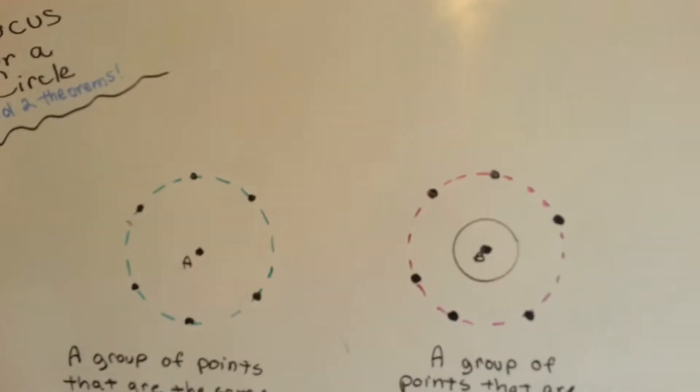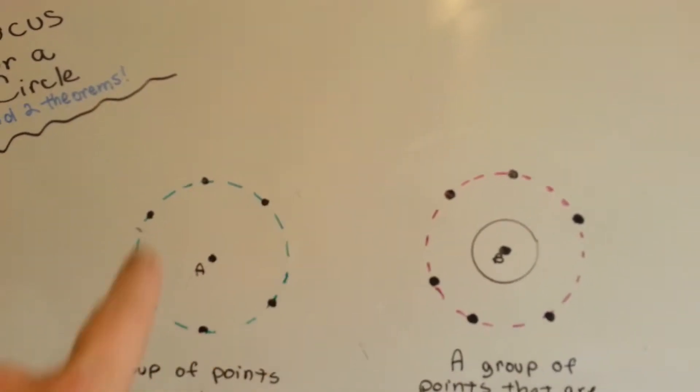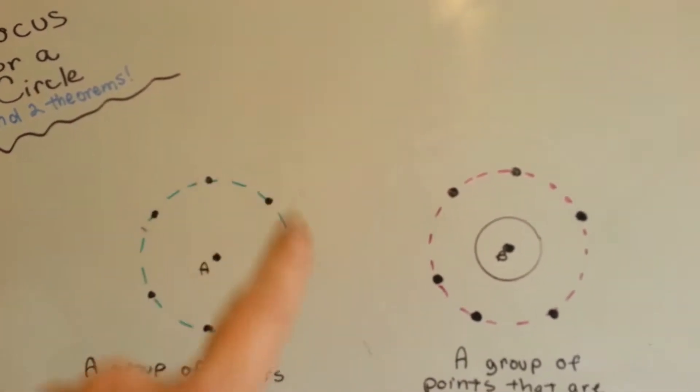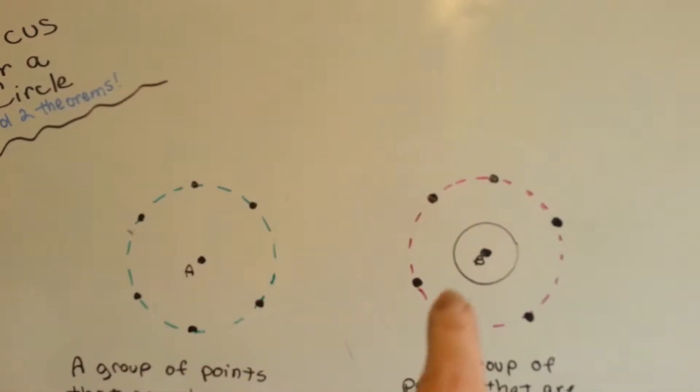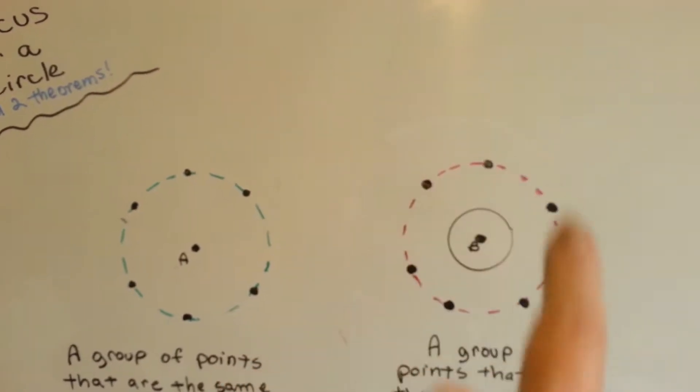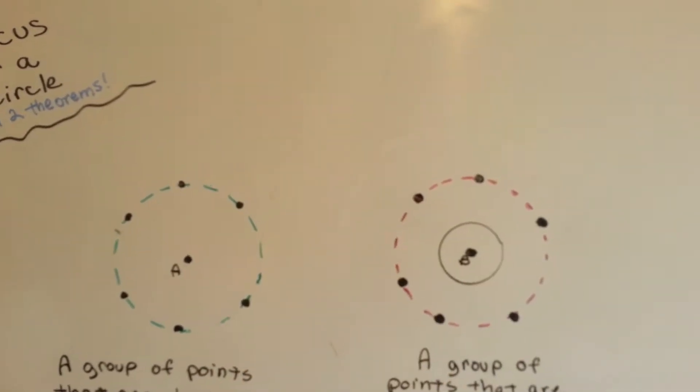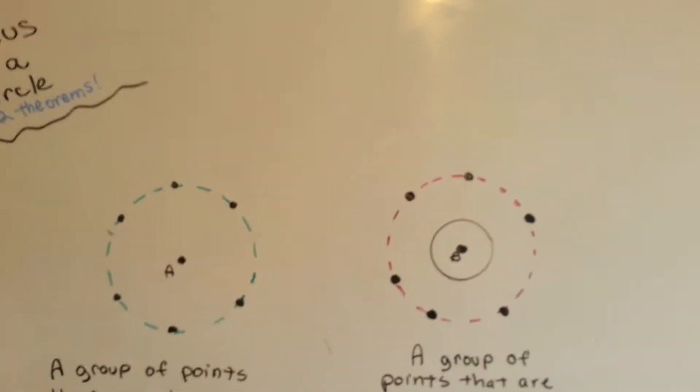Alright, look at my drawings here. Here we've got point A with a group of points around it, making a circle. And here we have circle B, the center point B, and it's got a bunch of points going around it, a group of points, and look, it's making concentric circles. That's our theorems. Let's check it out.